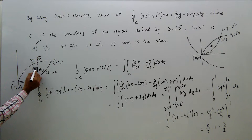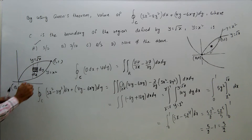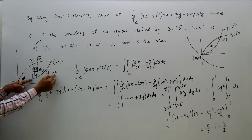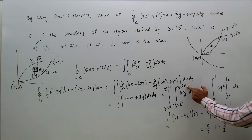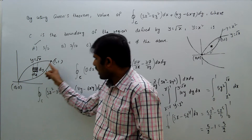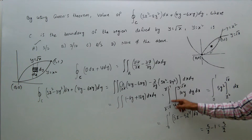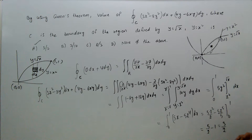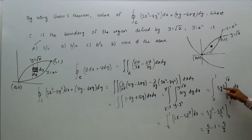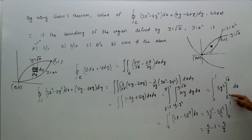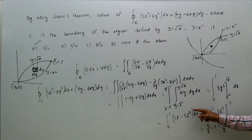Taking a small element dx dy, we integrate first with respect to y from y = x² (lower limit) to y = √x (upper limit), and then x goes from 0 to 1. Integrating 10y with respect to y gives 5y². Applying the limits from x² to √x: substituting y = √x gives 5(√x)² = 5x, and substituting y = x² gives 5(x²)² = 5x⁴. So the result is 5x - 5x⁴ dx, integrated from 0 to 1.